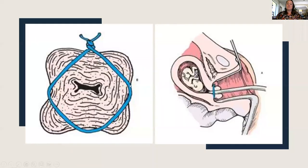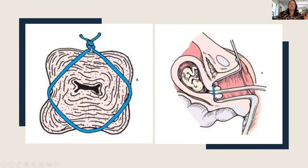A cerclage — a purse-string stitch placed by an OB-GYN early in pregnancy — is used to hold the cervix closed. It will need to be removed before delivery. If there is any bleeding or leaking, the patient should come in right away so the stitch doesn't tear through the cervix as it opens.